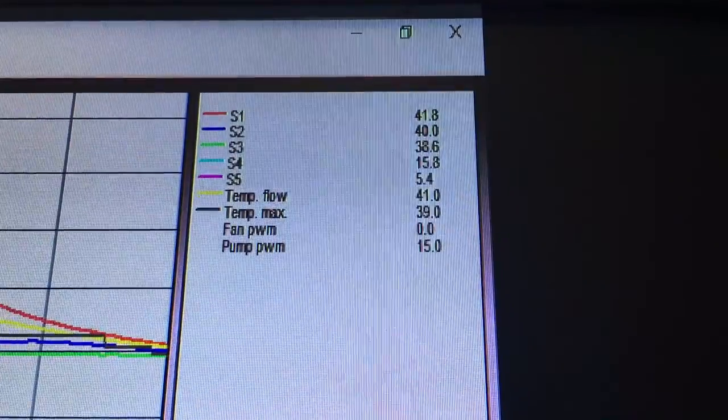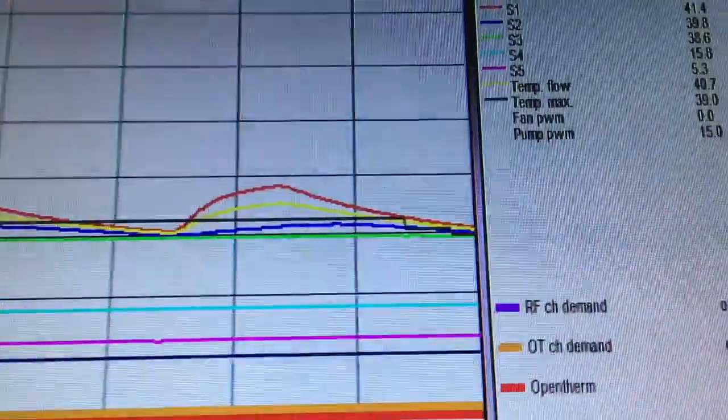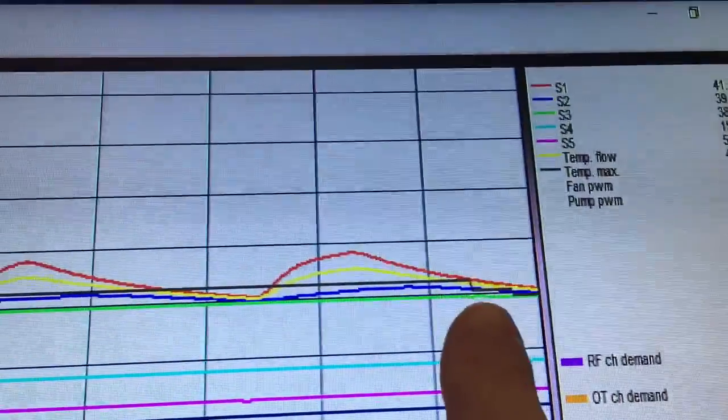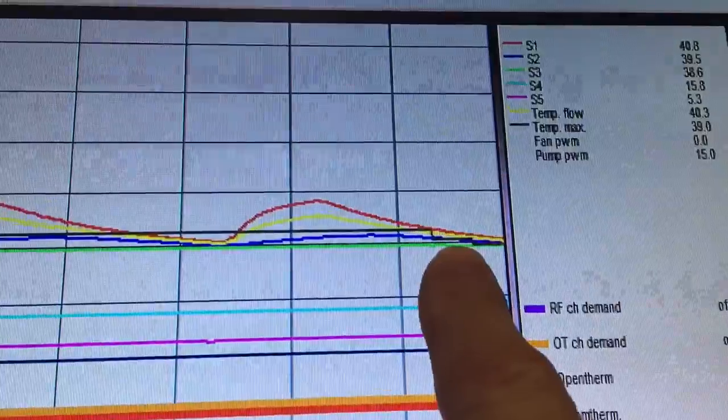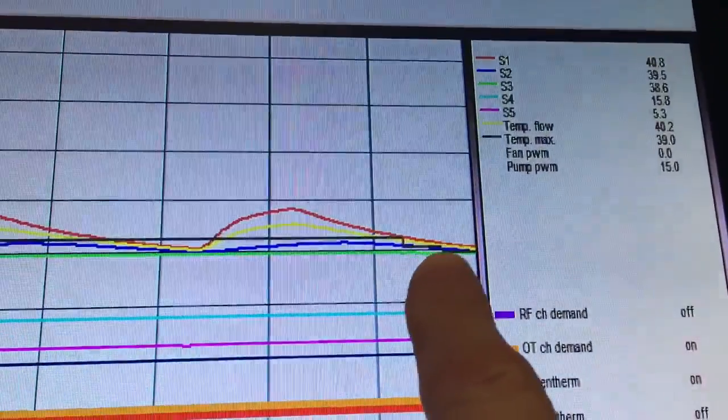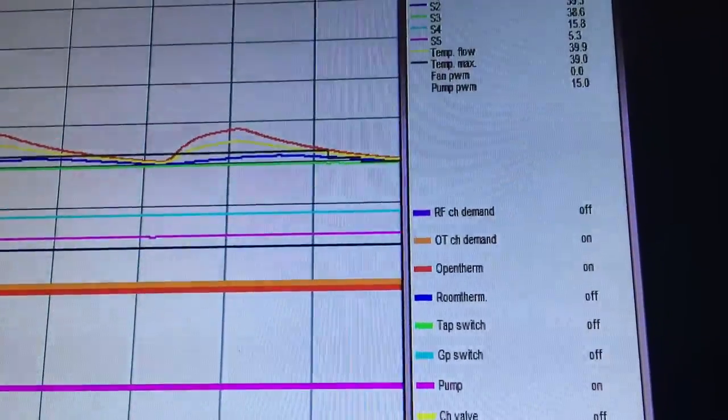So as you can see, the parallel shift works, and you can see it on the graph here. So if you look at the black here, you can see that it was at 45, then it went down to 41, and now it's gone down to 39 degrees. So you can see the parallel shift in operation there.